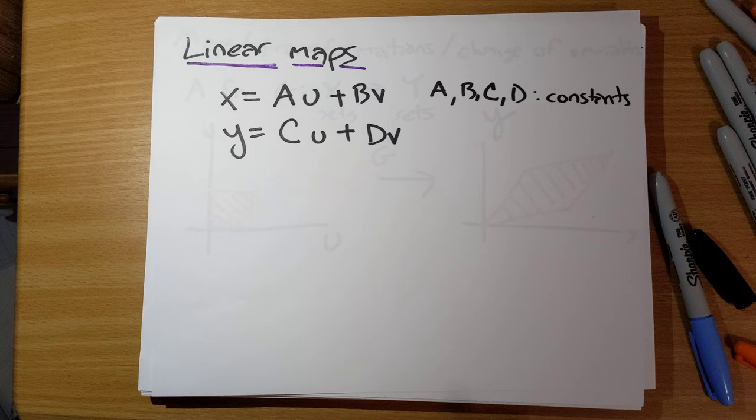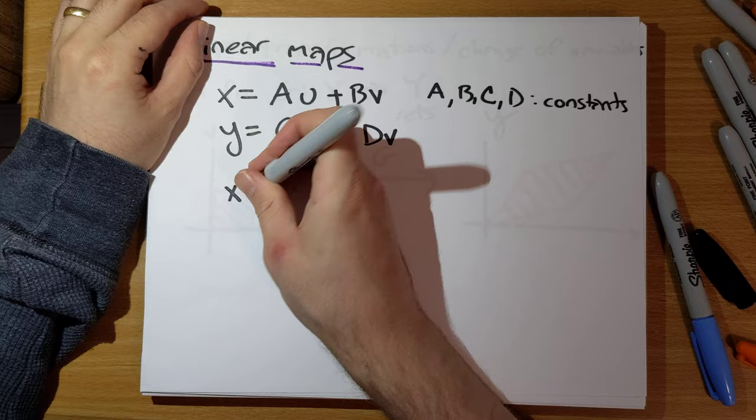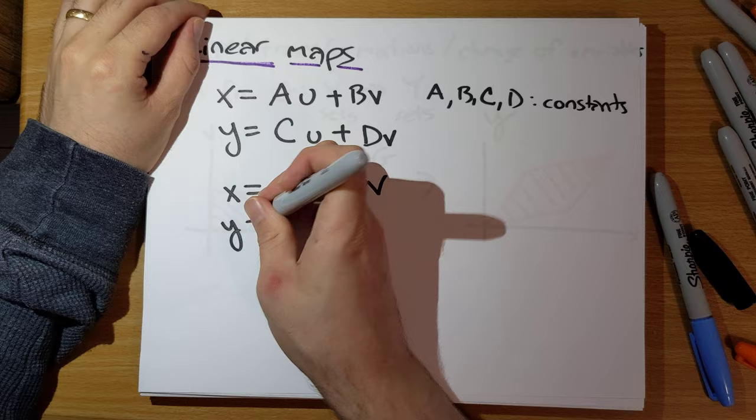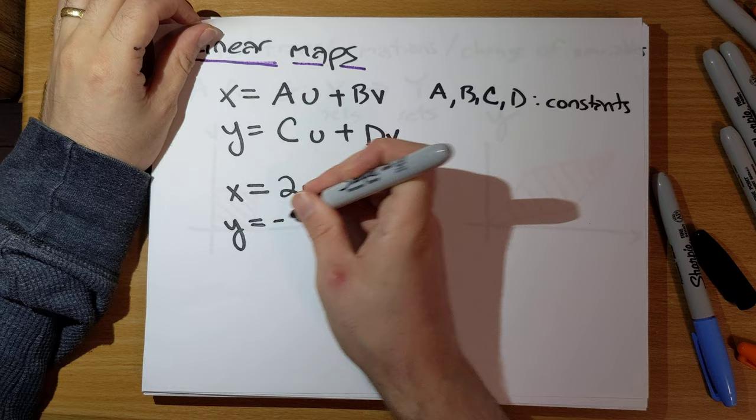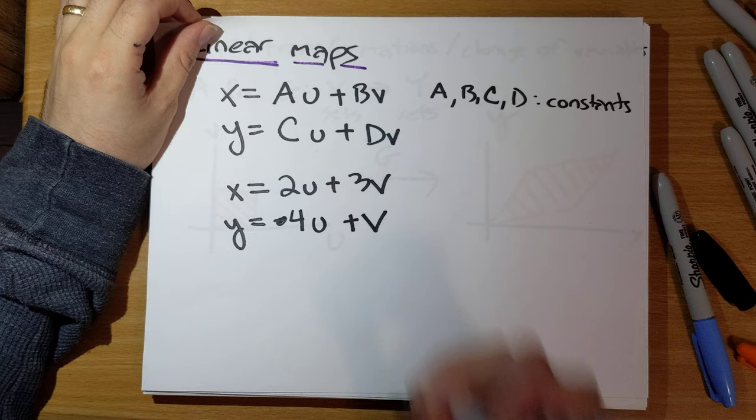As an example, we might have x equal to 2u plus 3v, and y equal to 4u plus v.